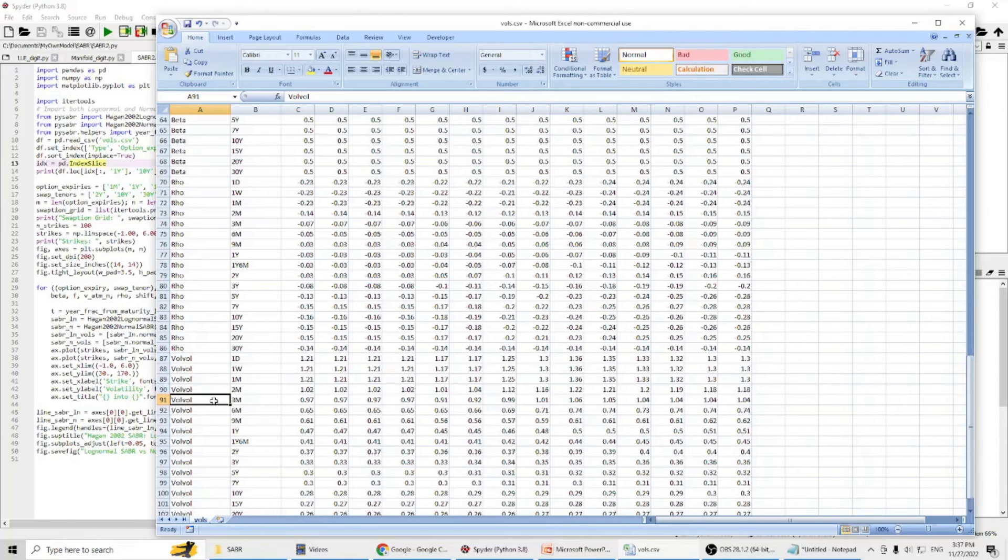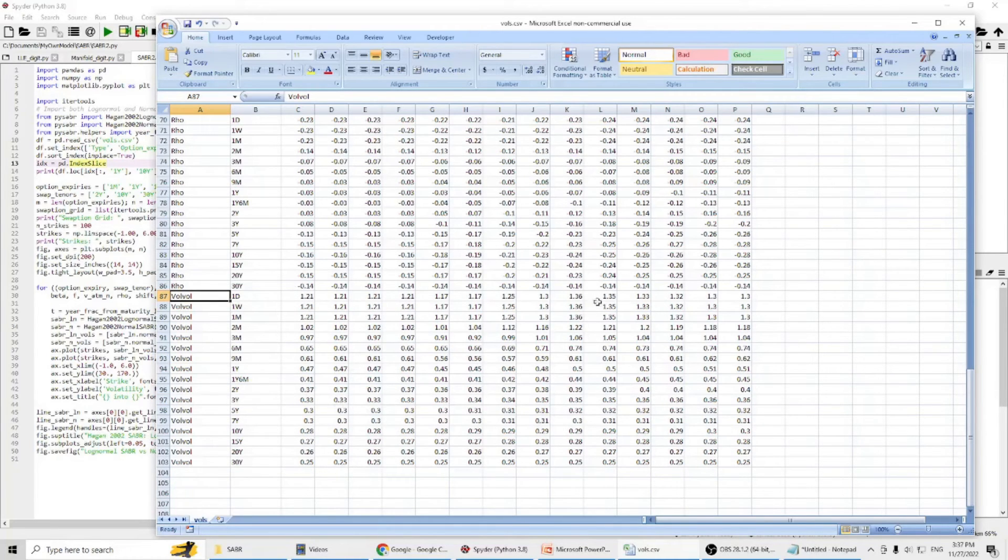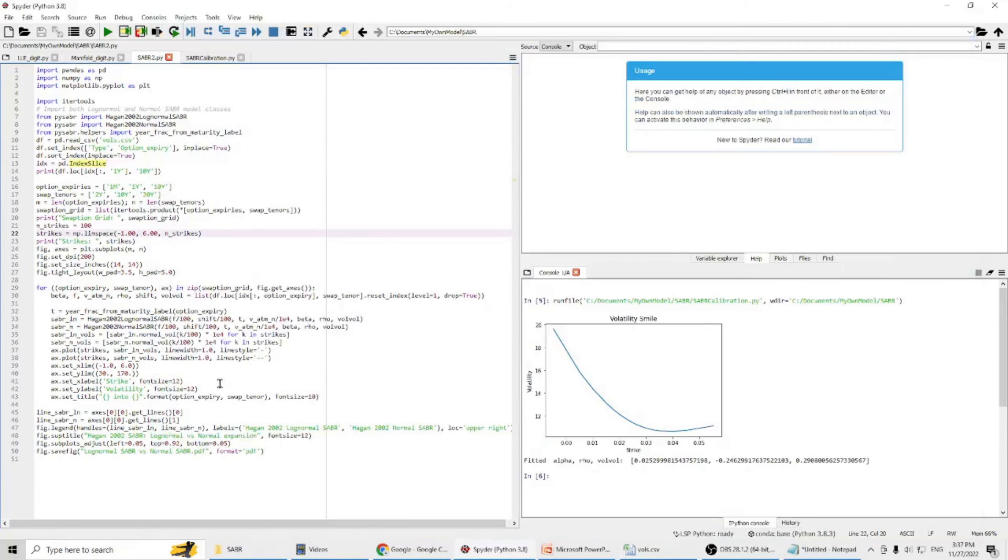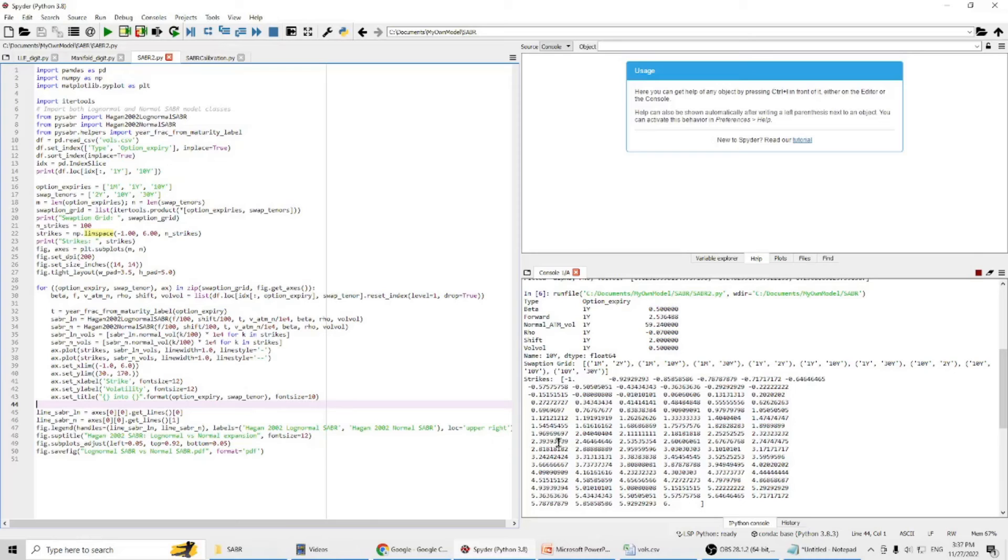And volatility of volatility. In my slide, I call it alpha, which means volatility of volatility. Those are our input data. We come back to Python and run the program. You can see this displays the data input, and the strike price is from minus one up to six.